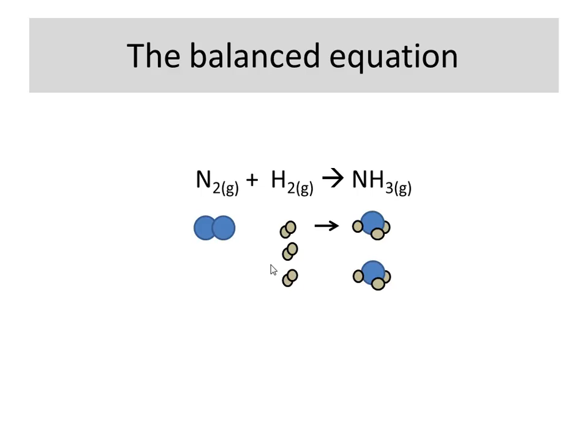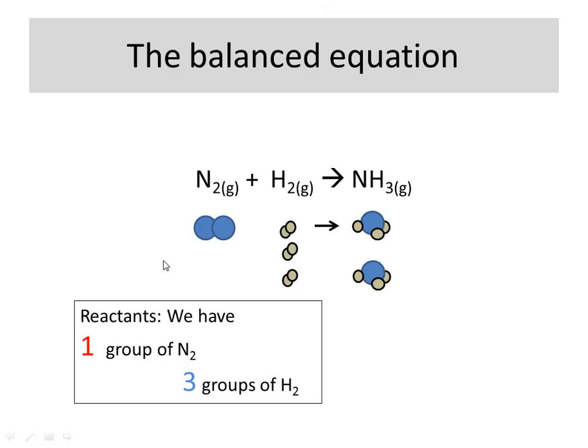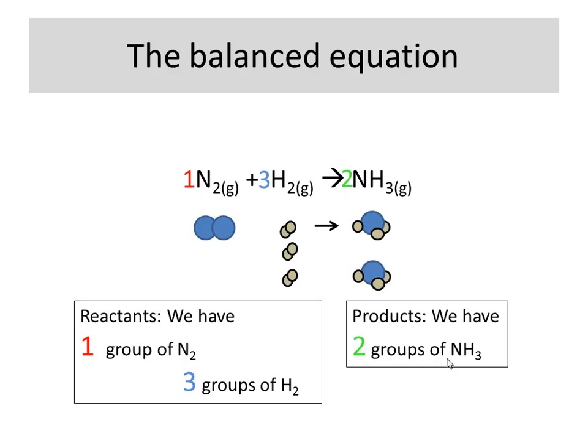So, my balanced equation here, I have one group of nitrogen and three groups of hydrogen. And I form two groups of NH3. So, my overall balanced equation is one nitrogen reacts with three hydrogens forming two NH3. So, this is what you want to write down up here. So, this here is our overall balanced equation.